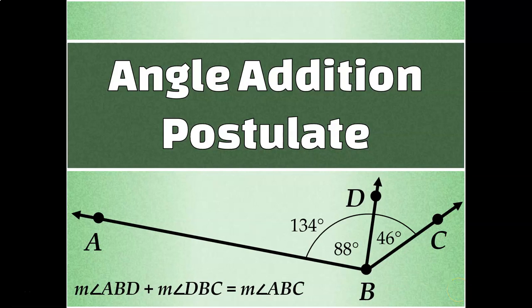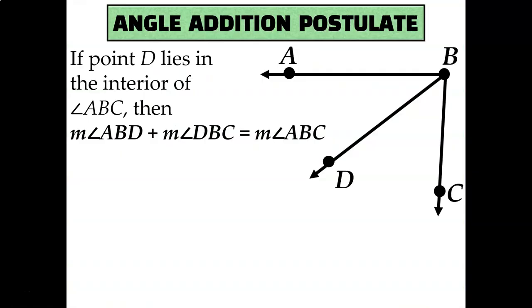Let's talk about the angle addition postulate. It states that if point D lies in the interior of angle ABC, then the measure of angle ABD plus the measure of angle DBC equals the measure of angle ABC. Clear as mud, right? Let's break that down.